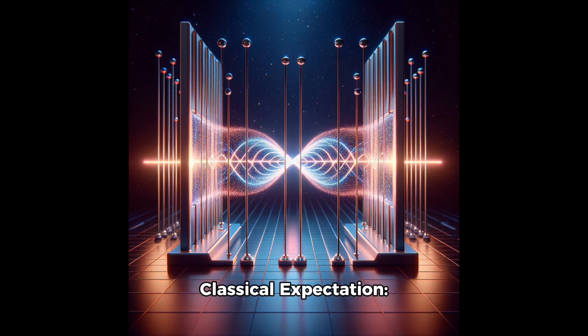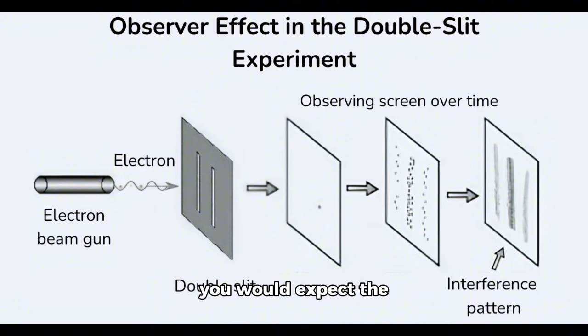Classical Expectation: In classical physics, you would expect the particles to behave like tiny billiard balls. Each particle would pass through one of the slits and strike the screen directly behind the corresponding slit, creating a pattern on the screen that matches the shape of the slits.